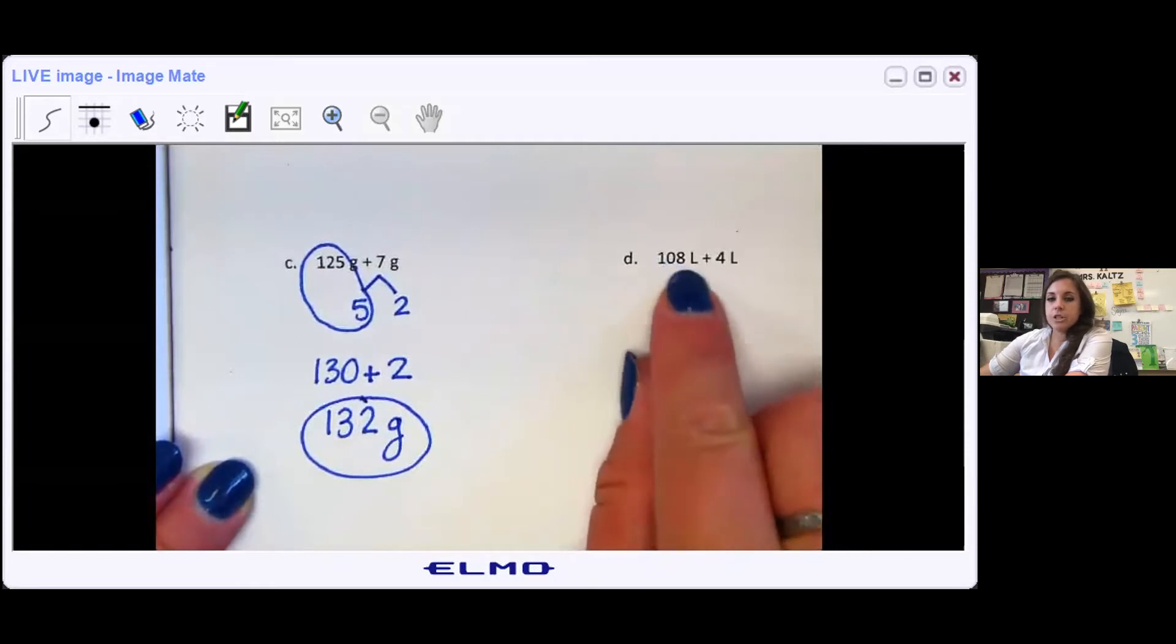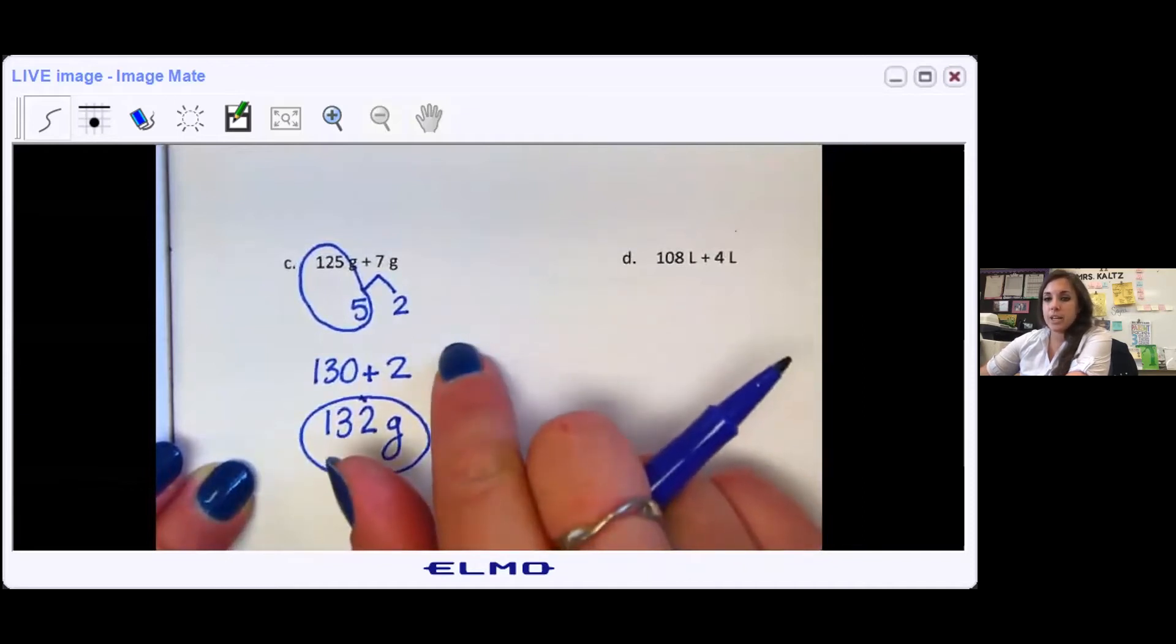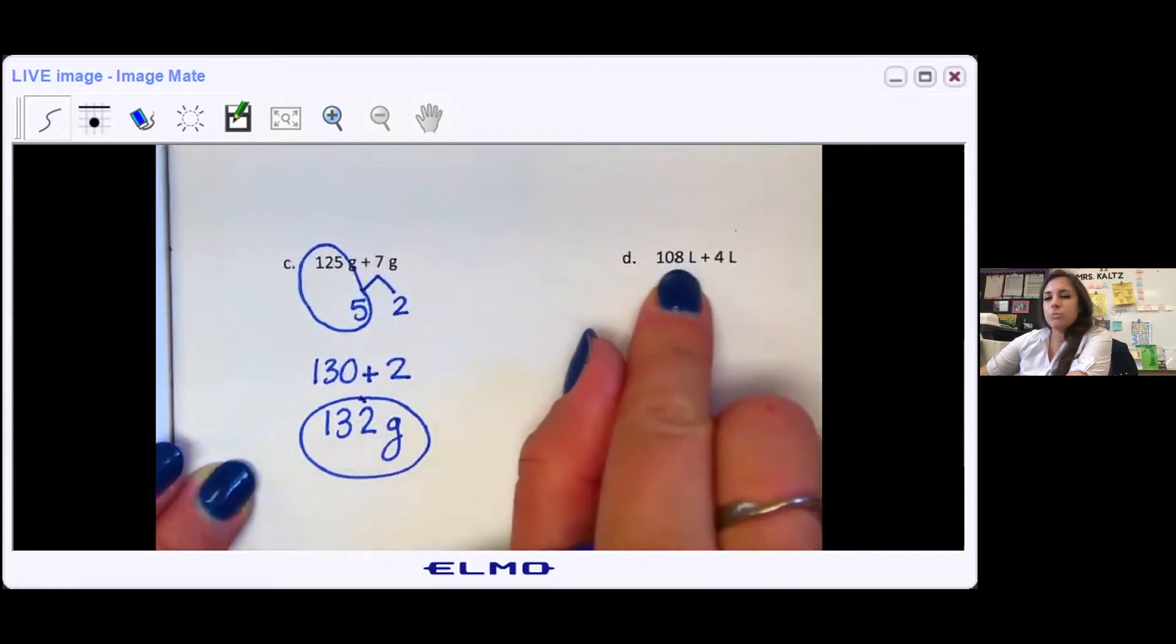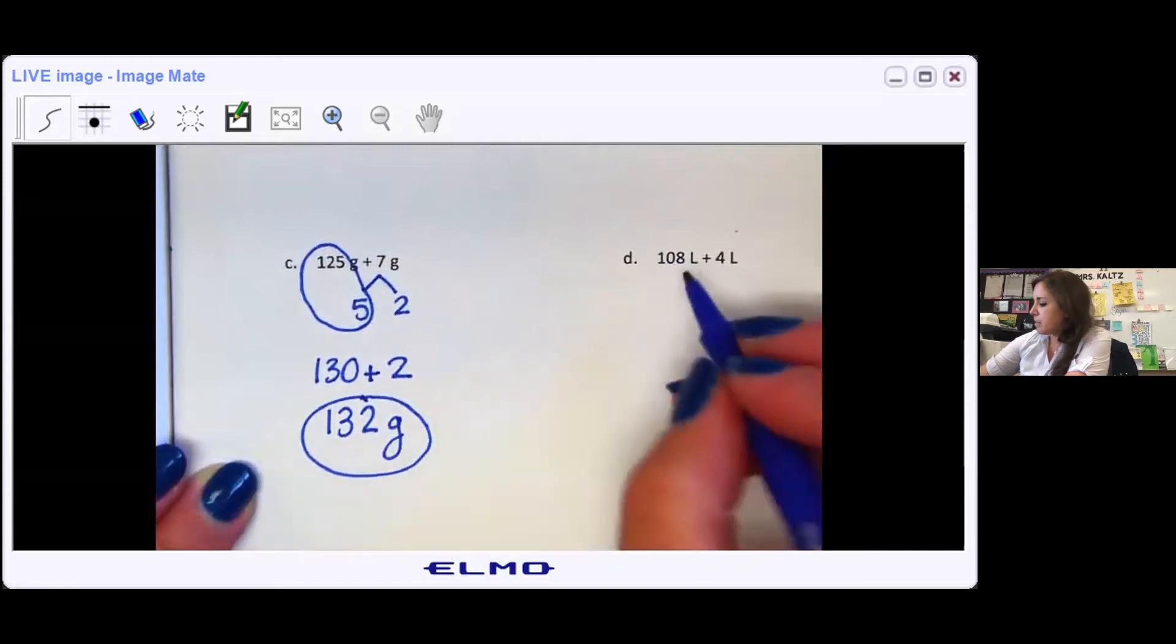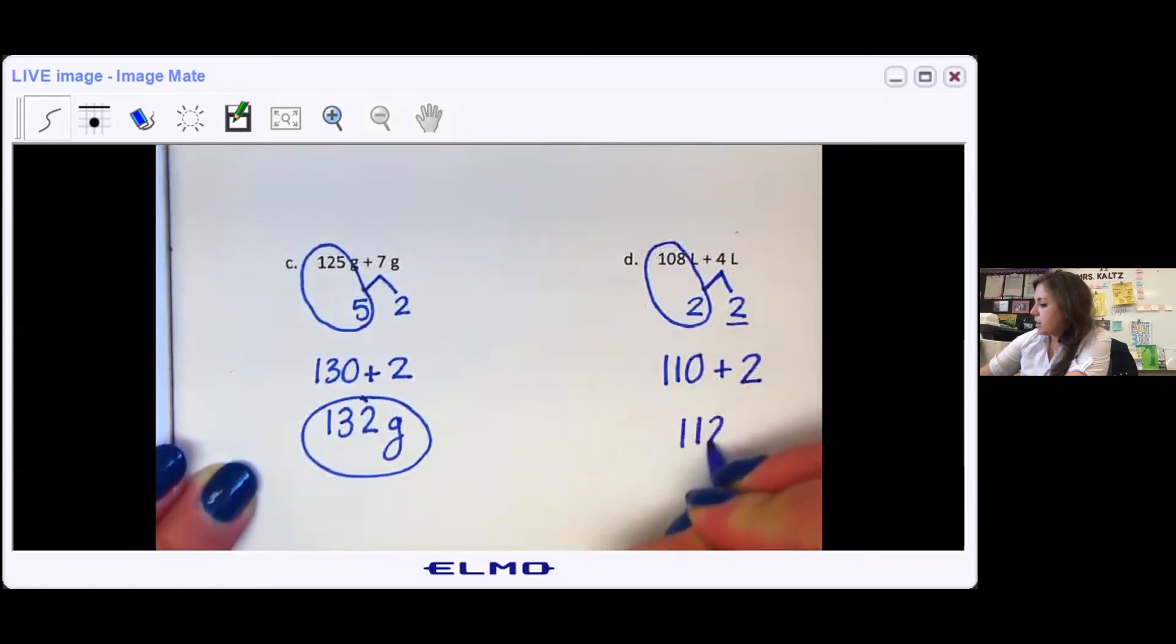Over here I have 108 plus 4. Now some of you may have just counted on to get your answer. I'm going to do my break apart strategy to make friendly numbers. 108, I only need 2 more to make it to my friendly number of 110. So I'm going to split 4 into 2 and 2. So 108 plus this 2 makes 110 plus my leftover 2 to get 112 liters.